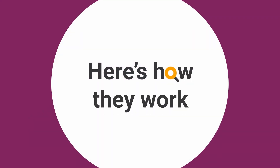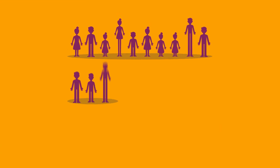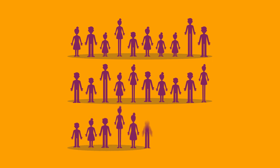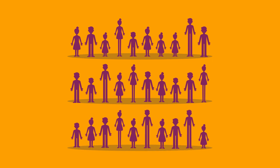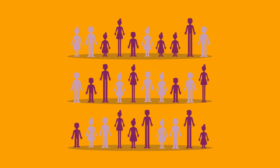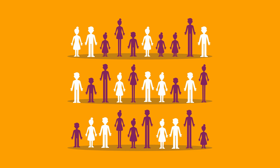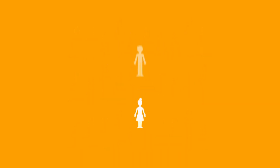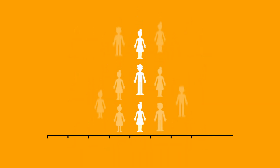Here's how they work. If we measure the heights of 30 people within a group, we'll find a common pattern. The majority of people will be around average height, represented in the middle of the graph.